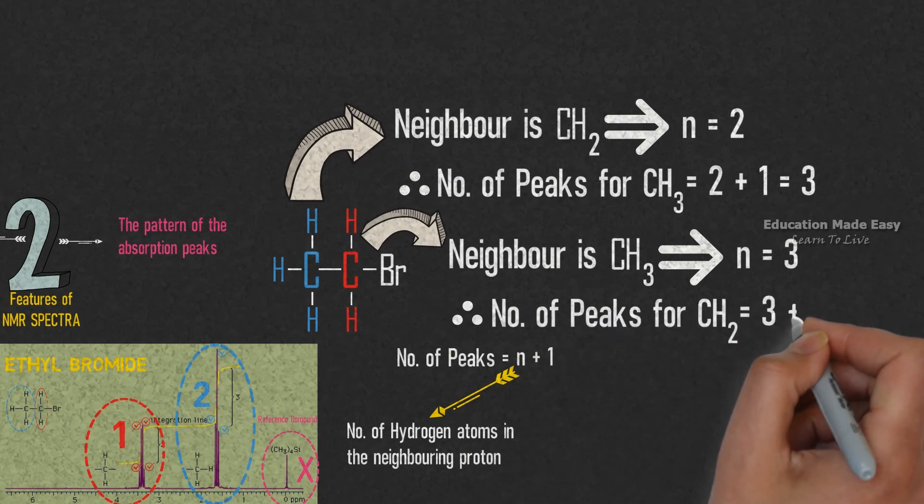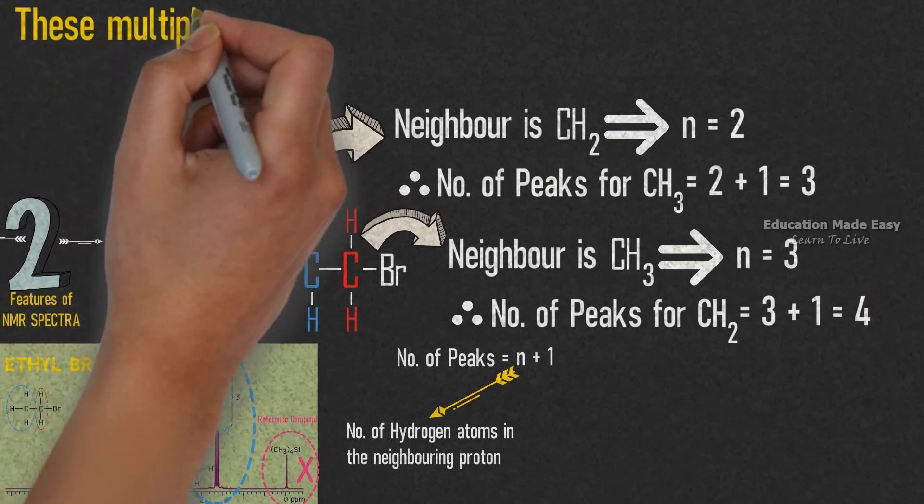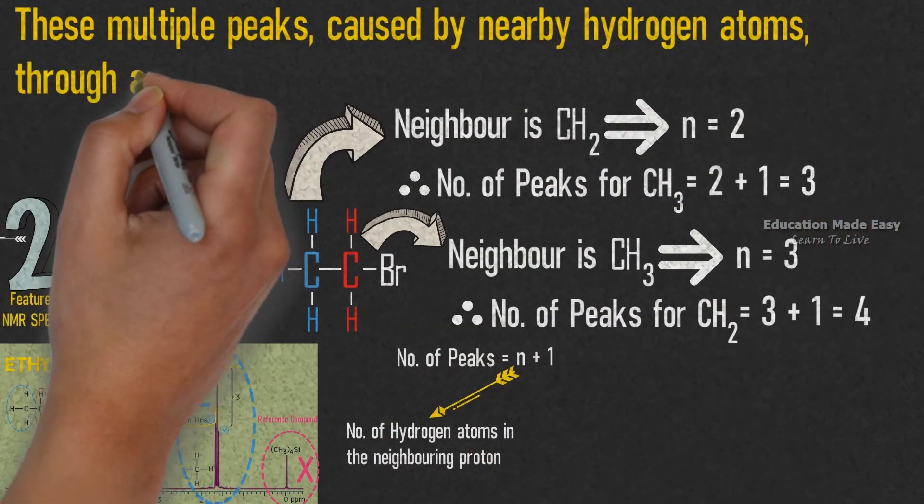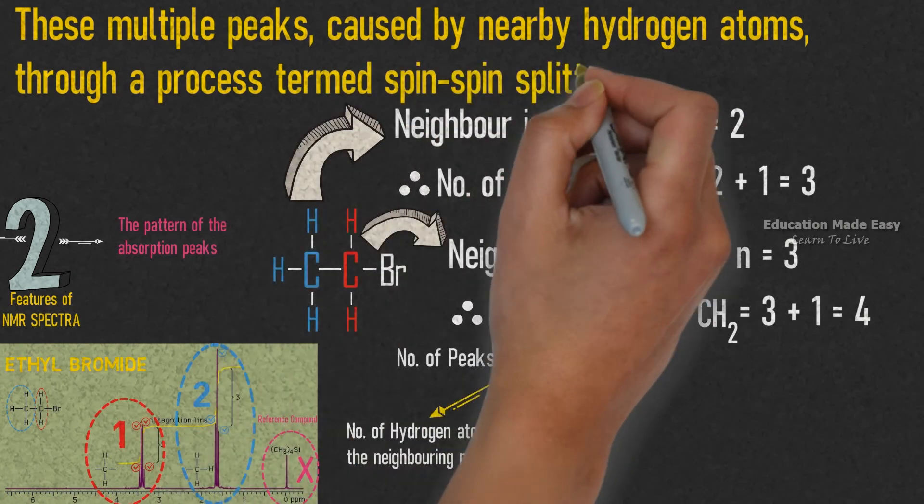These multiple peaks are caused by nearby hydrogen atoms through a process termed as spin-spin splitting.